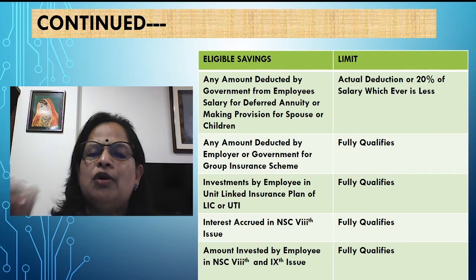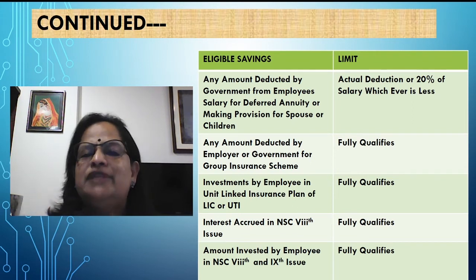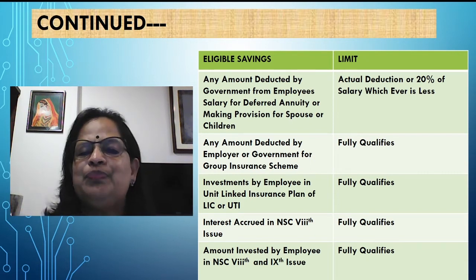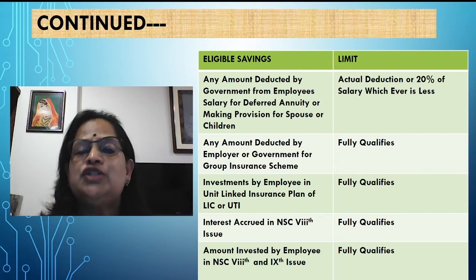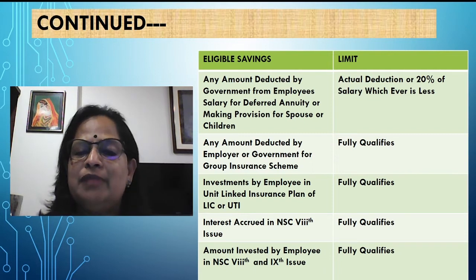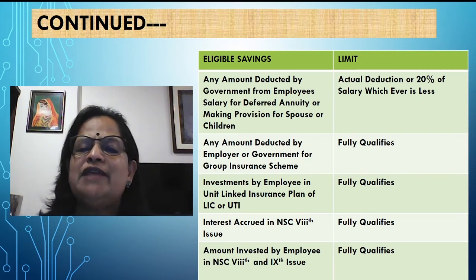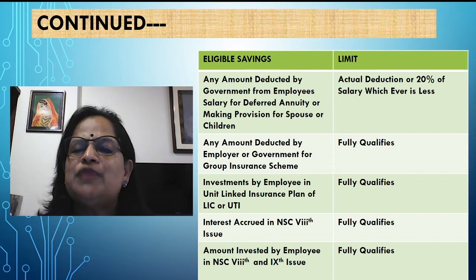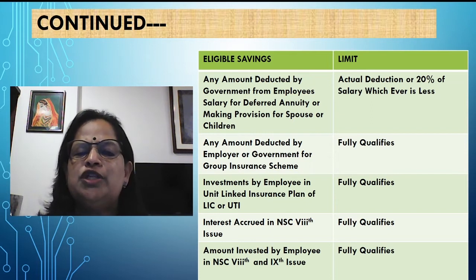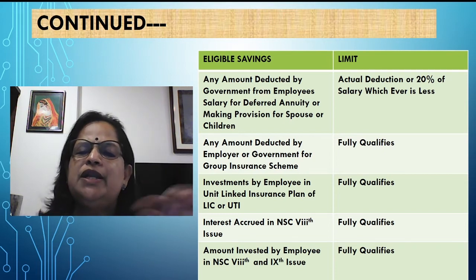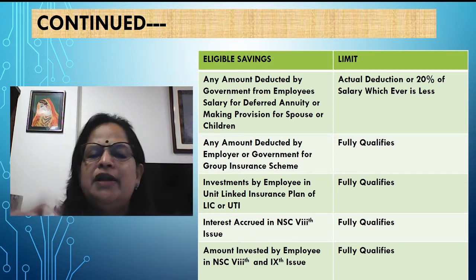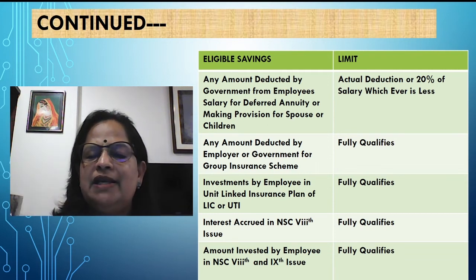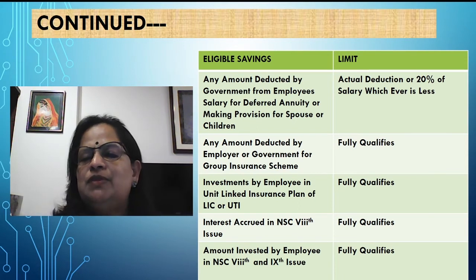Group insurance scheme will be there for almost all organizations. When an employee is working, if something happens during working hours, the employer has to give compensation. To avoid paying from their own funds, employers tie up with insurance companies and deduct a certain amount as group insurance from the employee's salary every month. That amount we can fully claim as 80C deduction. Next, investments by employee in unit-linked insurance plan of LIC or UTI fully qualify — but only LIC or UTI; any other company is not eligible.